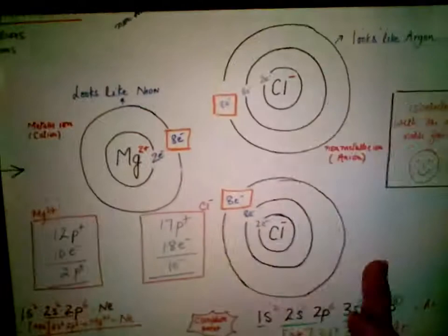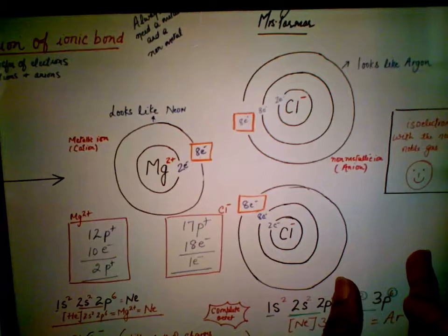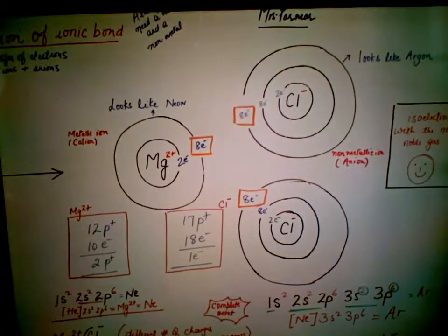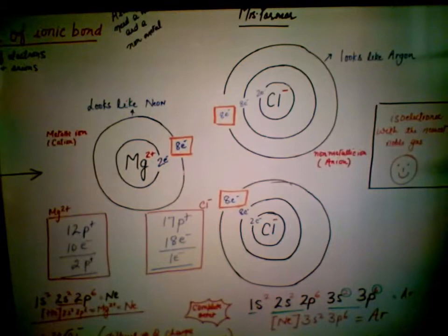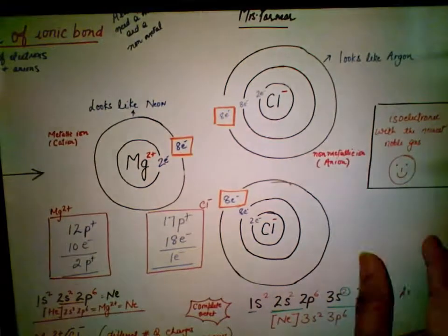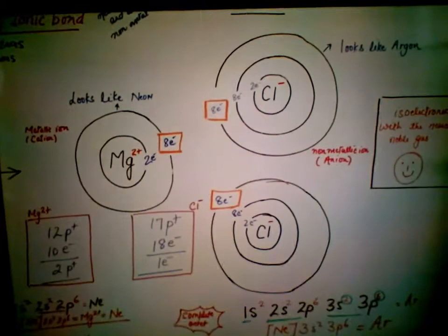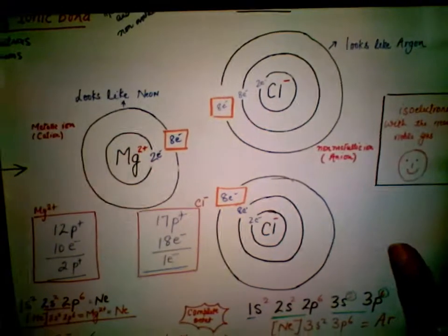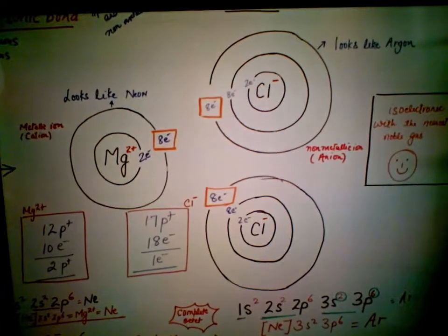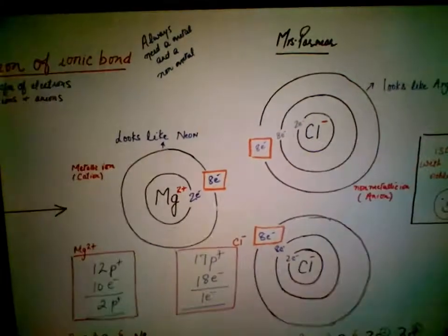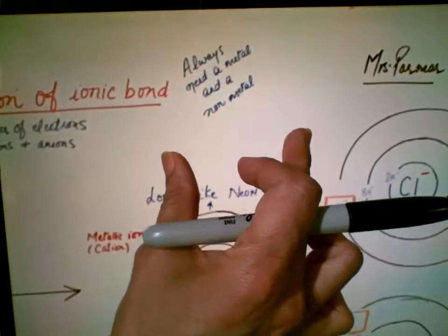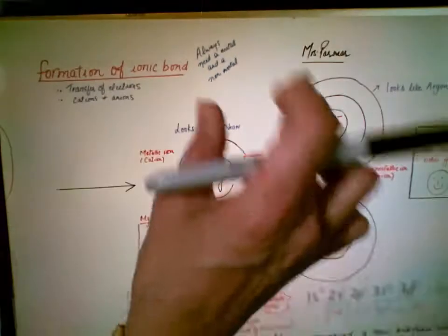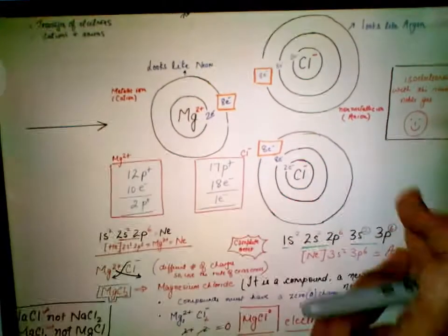One ion is metallic (Mg²⁺) and the other is non-metallic (Cl⁻). The magnesium ion can say it's 'just like neon' because its electron configuration is equivalent to neon's. Chlorine can pretend it is argon because of its electron configuration. The electron configurations of these ions are isoelectronic with the nearest noble gases — they're stable and happy, as shown by the smiley face. Remember: we always need a metal and a non-metal, and we look for large electronegativity differences.